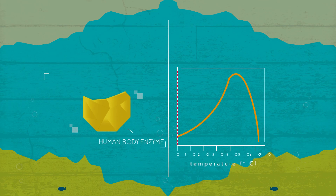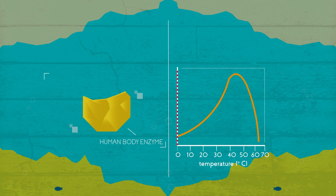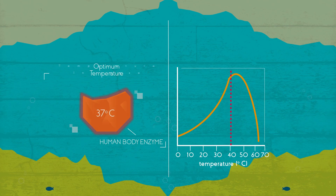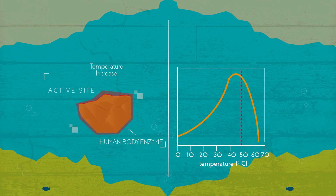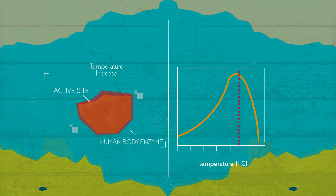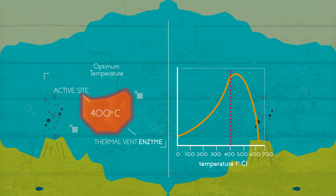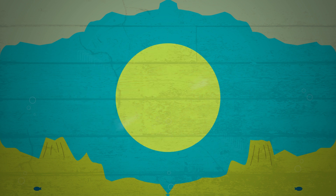For example, if the temperature of the environment is too high for the specific enzyme, it may become denatured. Typically, enzymes that operate in warm-blooded animals tend to have an optimal temperature of 37 degrees Celsius, which is body temperature. As the temperature rises above that, the rate of reaction rapidly falls because the active site has changed shape. Enzymes in bacteria that live in thermal vents have a much higher optimal temperature.